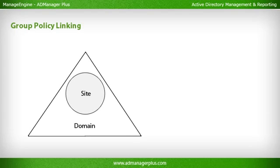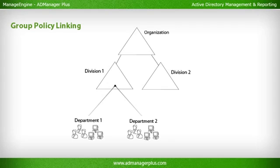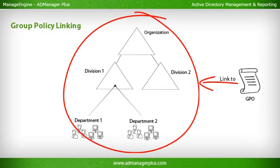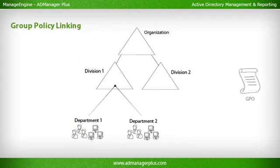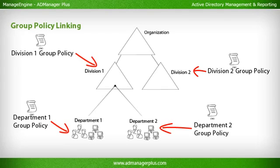Group Policy Linking: Any Active Directory implementation will have, at the simplest, a domain and a site. While a domain is a logical grouping of objects pertaining to a specific area or function, the site is a physical grouping of objects based on their geographical location. Users and computers in an organization are often segregated into different domains or organizational units based on their departments, functions, or products. A separate set of group policies is created for each required domain or OU and linked to the corresponding domain or OU using the Group Policy Management Console.